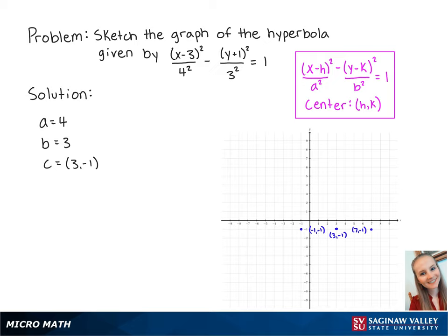Since b is equal to 3, we're going to graph two points, 3 above and 3 below the center. So the first point is at (3, 2), and the second point is at (3, -4).